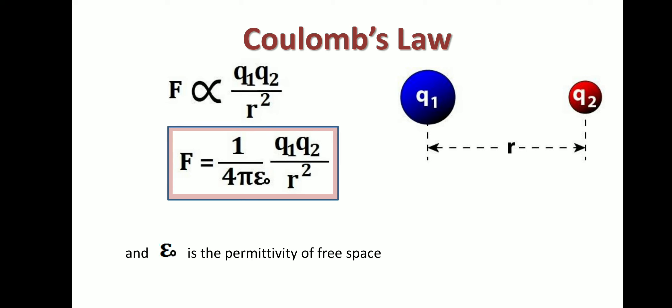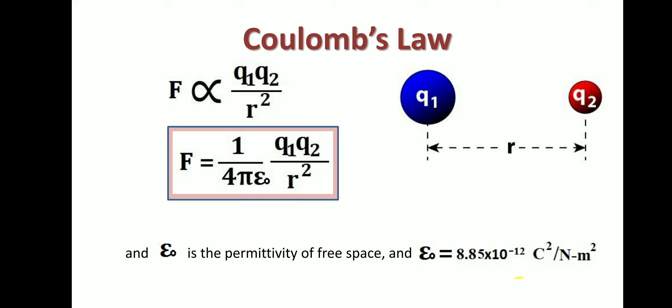The term ε₀ is the permittivity of free space. There is a free space — or vacuum, or air — between the two charges. This medium permits the charges to attract or repel each other, and the factor describing this is called the permittivity of free space. The value of the permittivity of free space is 8.85 × 10⁻¹² C²/(N·m²). With Coulomb's law we can also derive a vector form.